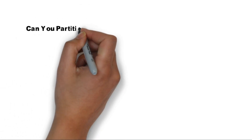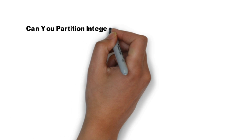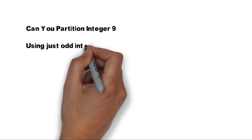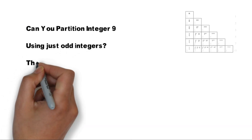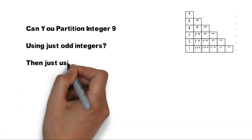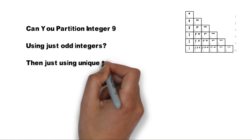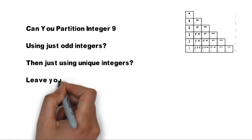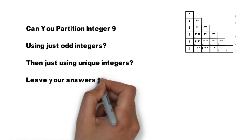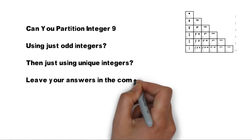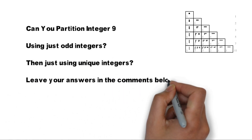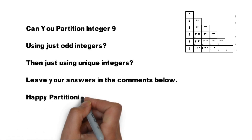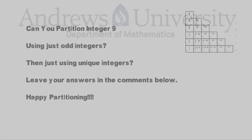Having said that, can you partition integer 9 using only odd integers, and then try it using only unique integers as well? Leave your comments in the comment section below, and happy partitioning!